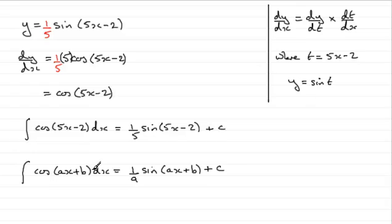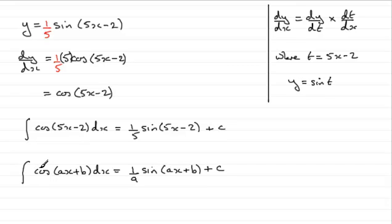The same idea applies to sin(ax + b) or sec²(ax + b) — you always find you have to divide out the a that arises from the chain rule, by multiplying by 1 over a at the front. I leave it to you to prove that the integral of sin(ax + b) is minus 1 over a times cos(ax + b), and that the integral of sec²(ax + b) is 1 over a times tan(ax + b). That brings us to the end of this tutorial — I hope you found it of some benefit.